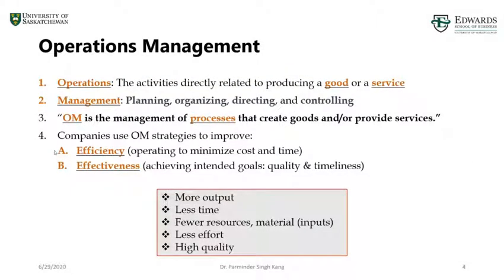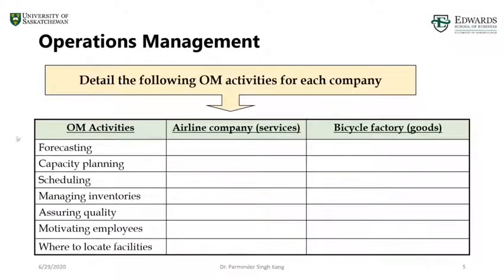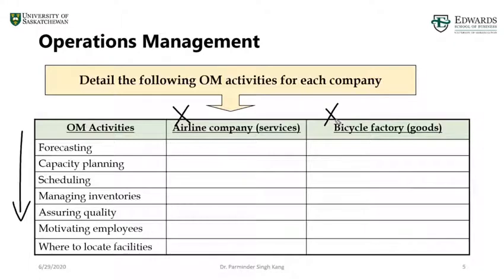To explore this a little further, let's look at a simple example of operations management activity in a service organization and in a manufacturing firm. I have listed some activities which belong to operations — we have a service company such as an airline and a manufacturing firm, in this case a bicycle factory. I'll walk through the activities for an airline, then you can have a go on the bicycle factory.